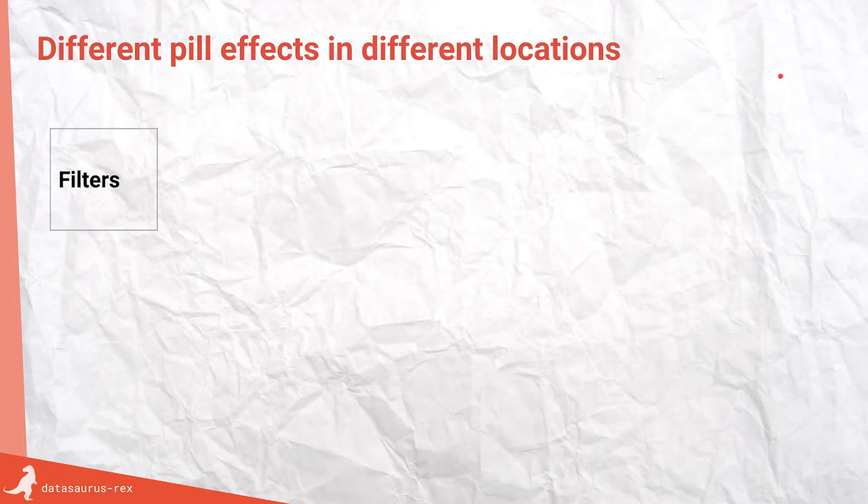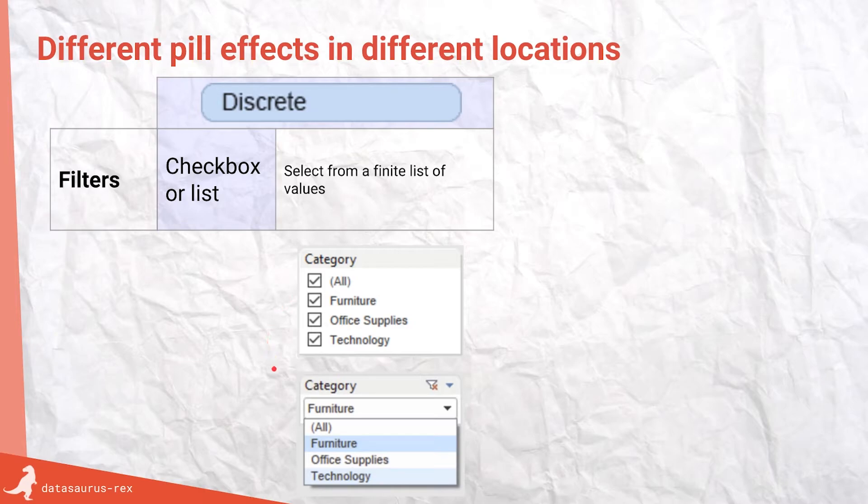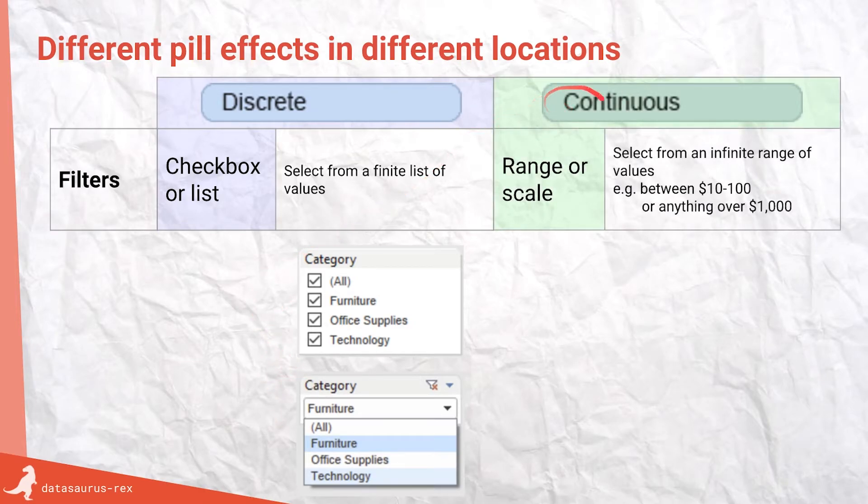So when you put these into filters, the discrete values, because they're finite, they're like checkboxes or limited range. So in a dropdown or a slider. But when you put them into continuous values into filter, they're more like a range or a scale. So you have complete control. I don't want to see values between here and here or above a certain amount or below a certain amount. Again, putting you in control of what you see on the map or on the data visualization.